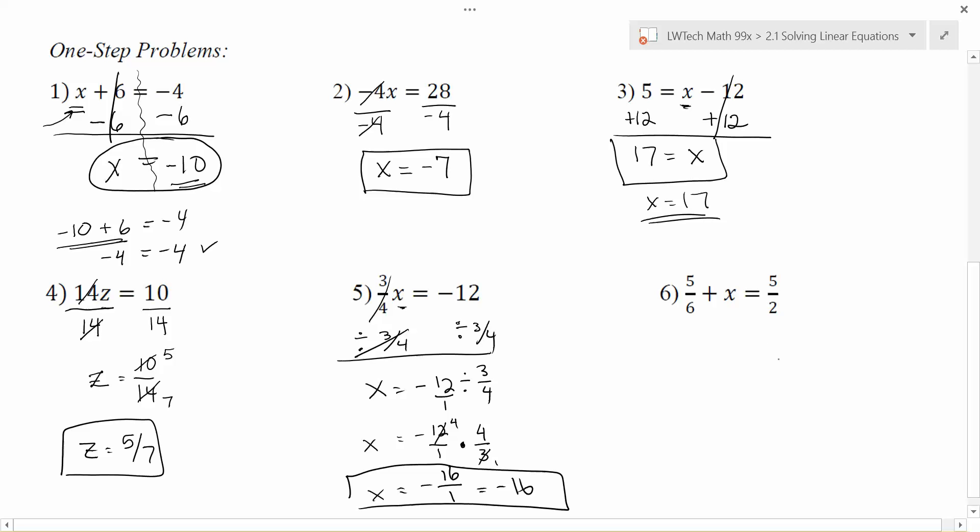And then when we come to this problem over here, we want to get the x by itself. What's going on is the 5/6 is in the way. It's being added right now, so we're going to need to subtract 5/6 from each side. So now I have 5/6 minus 5/6 is 0, so that's gone. And on this side of the equation, I have 5/2 minus 5/6 that I need to try to evaluate.